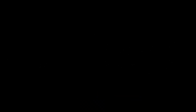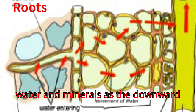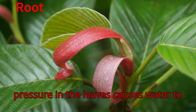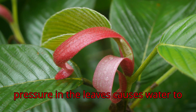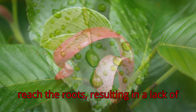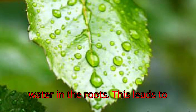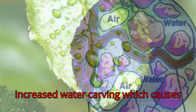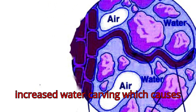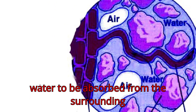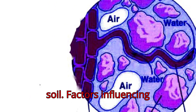Roots are essential for the absorption of water and minerals. As the downward pressure in the leaves causes water to reach the roots, this results in a lack of water in the roots, leading to increased water uptake, which causes water to be absorbed from the surrounding soil.